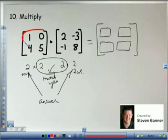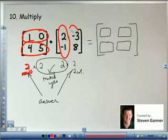I want you to circle the rows of the first. We have 2 rows, so you have to circle them. And the columns of the second. We have 2 columns of the second. So that's how you know what to circle.